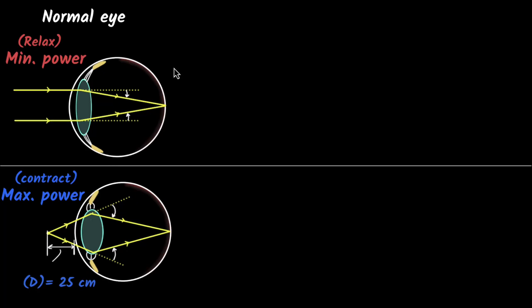Let's explore the various defects in our eyes. Before we start, let's quickly recap the features of the normal eye. When looking at things far away, the rays of light come in parallel, and to focus them on the retina we need the minimum power. This is when your eyes are the most relaxed — the ciliary muscles are relaxed, and you require the minimum power.